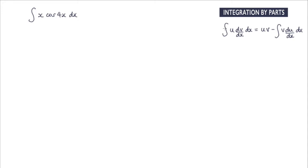First step is to decide which part is u. Is it going to be the x term, or is it going to be the cos 4x term? And the way to decide usually is to let u equal the term that when we differentiate it, it will become easier to work with.